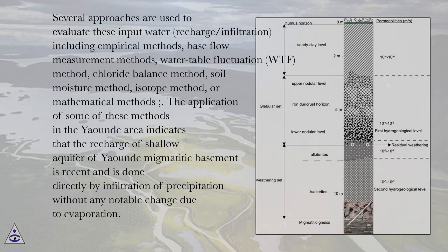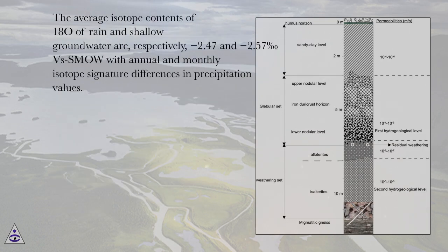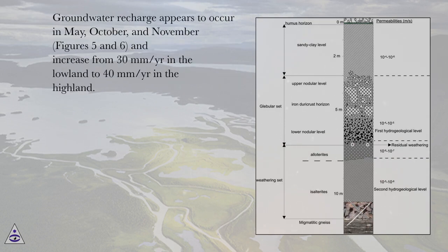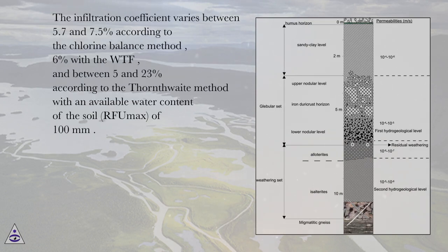The application of some of these methods in the Yande area indicates that recharge of the shallow aquifer of the Yande mid-metamorphic basement is recent and occurs directly by infiltration of precipitation without any notable change due to evaporation. The average isotope contents of δ¹⁸O of rain and shallow groundwater are, respectively, −2.47 and −2.57‰ VSMOW. Groundwater recharge appears to occur in May, October, and November, increasing from 30 mm/year in the lowland to 40 mm/year in the highland. The infiltration coefficient varies between 5.7 and 7.5% according to the chloride balance method, 6% with the WTF method, and between 5 and 23% according to the Thornthwaite method with an available water content of the soil (RFU max) of 100 mm.